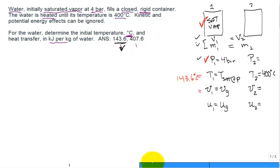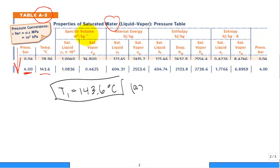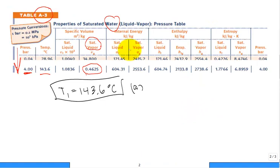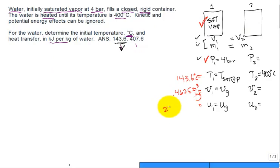That would be the answer for maybe part A if they labeled it part A. Let me go back and take a look. 143.6 looks good. So let's go down here. I just want to put numeric values on this sheet as well. 143.6 degrees C. And then V sub 1, go back to our table. It's saturated vapor. So it's V sub G. That'd be 0.4625 meter cubed per kilogram. I'm writing it in a kind of unorthodox way, but hopefully you'll follow. And then use of 1, the internal energy of saturated vapor comes in at 2553.6 kilojoules per kilogram.